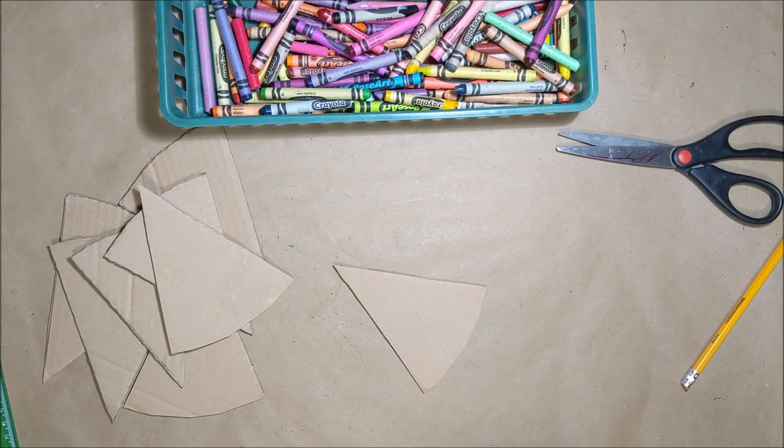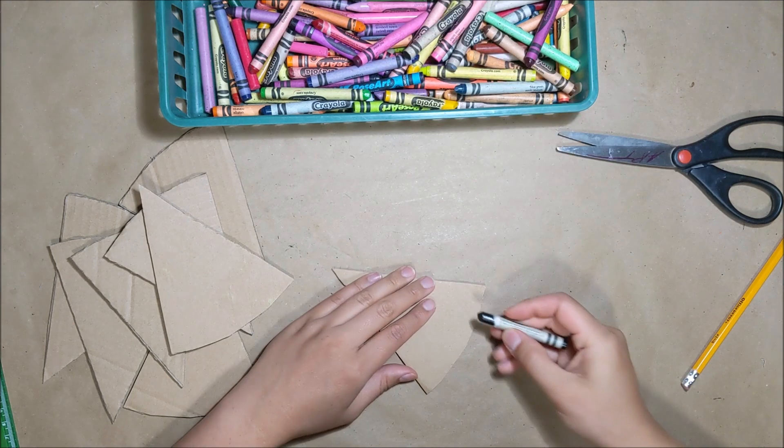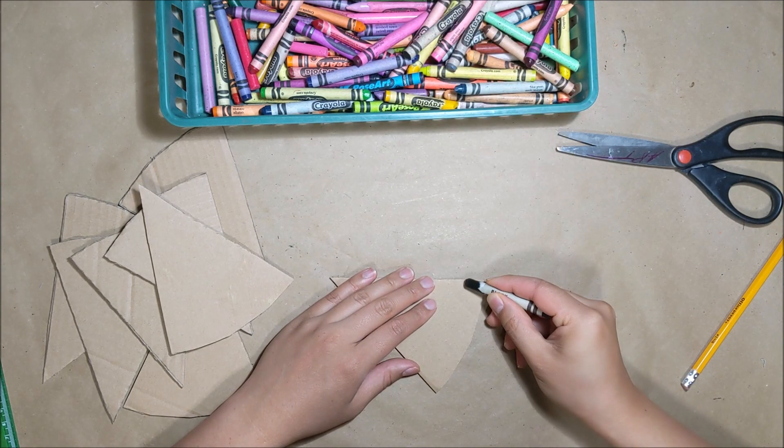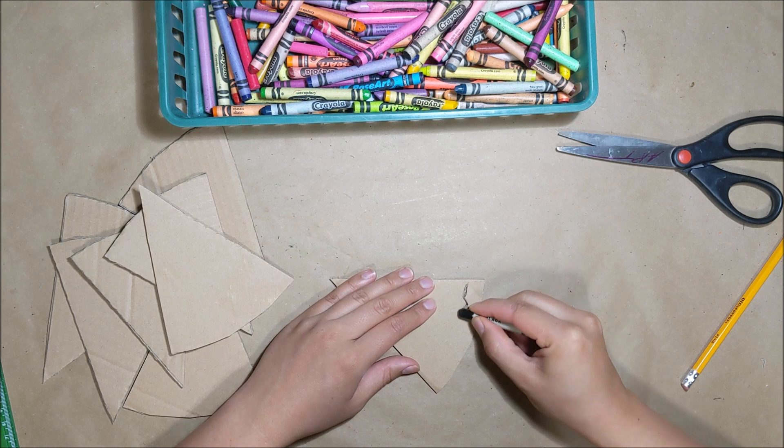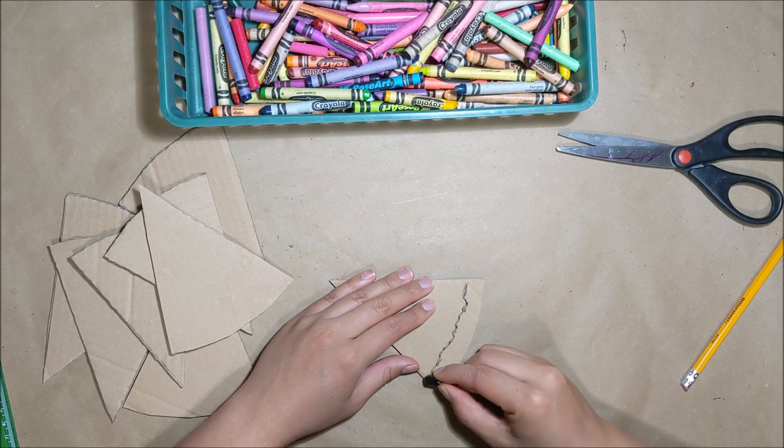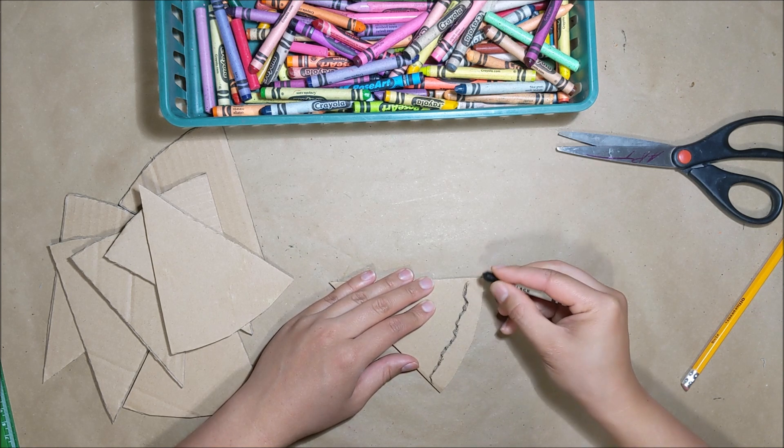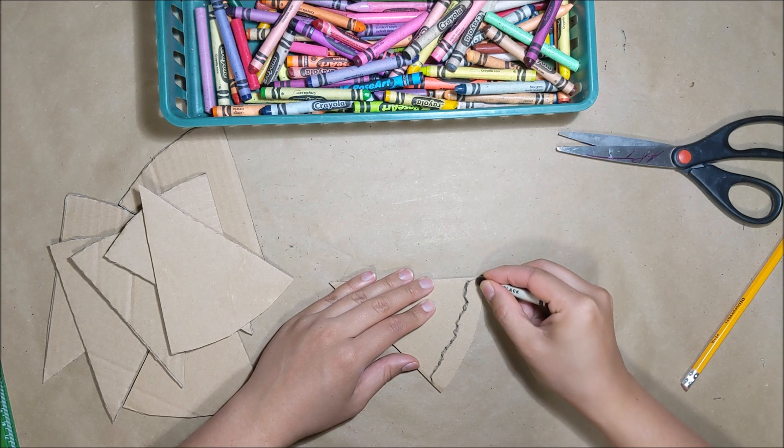Now that we have our slices let's decorate our pizza. I'm using crayons but you can use any medium that you like. Starting with a black crayon I'm creating a rugged line for my crust. Your crust line shouldn't be smooth.